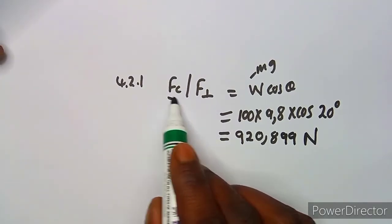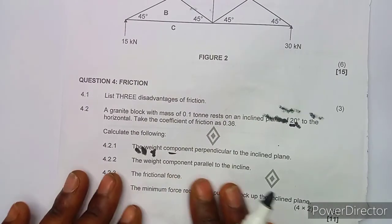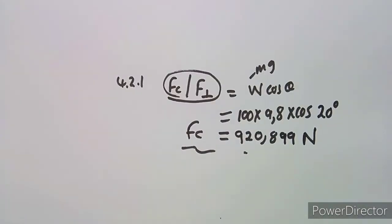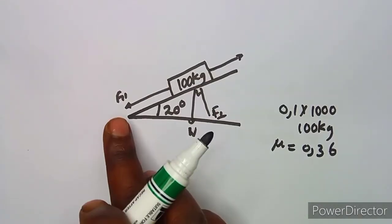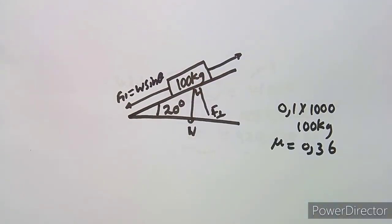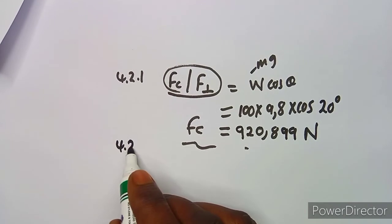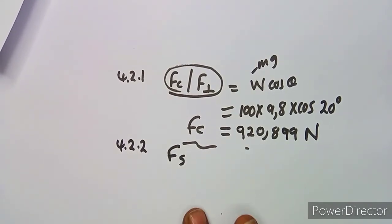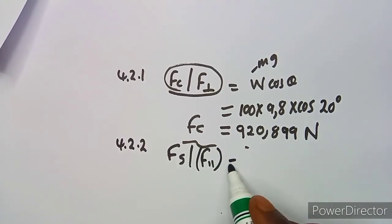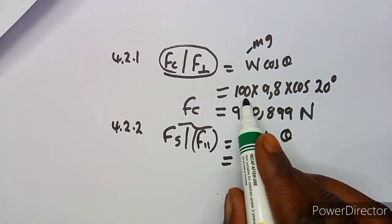That perpendicular component can also be written as F_c or F_perpendicular. Moving to question 4.22, we calculate the weight component parallel to the plane. The parallel component is W sin θ. Substituting: 100 × 9.8 × sin 20°.